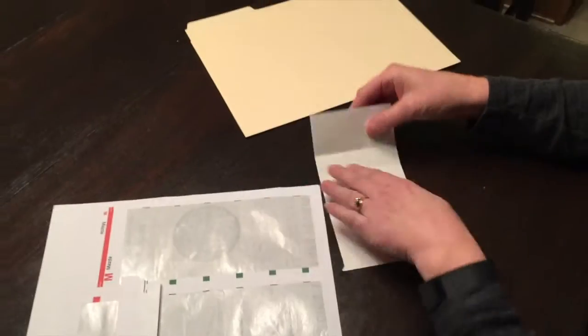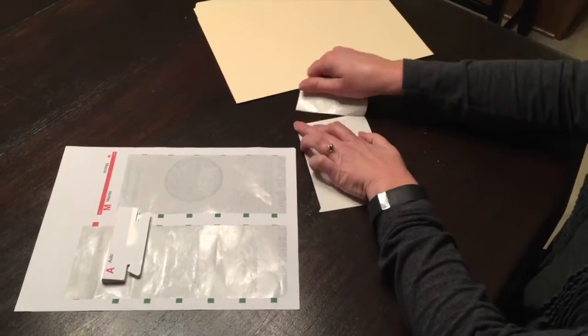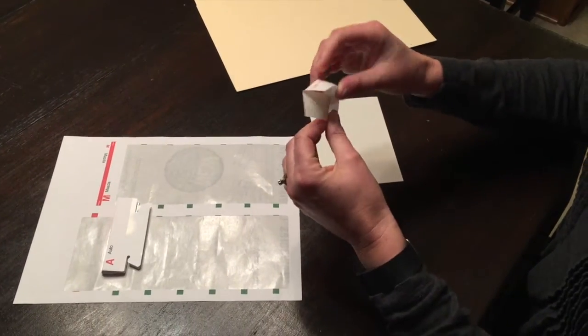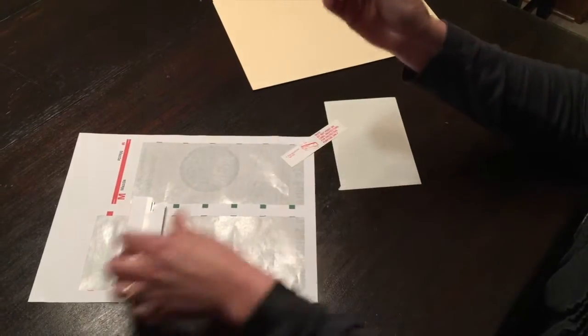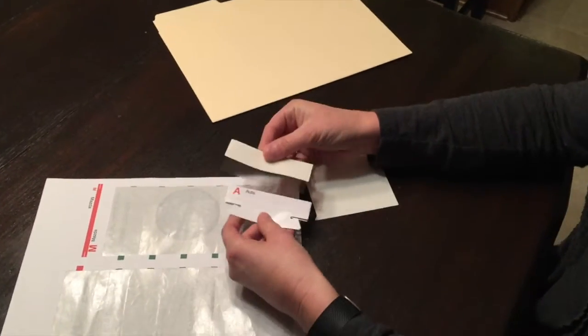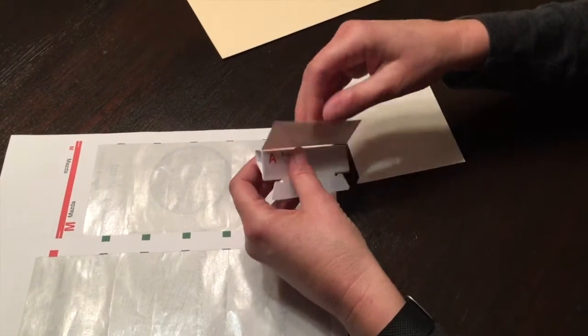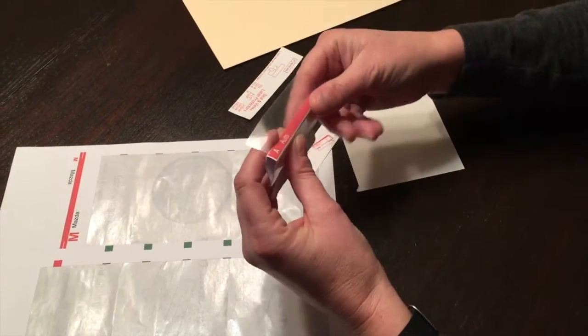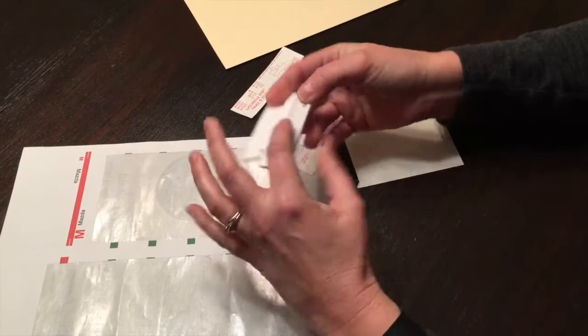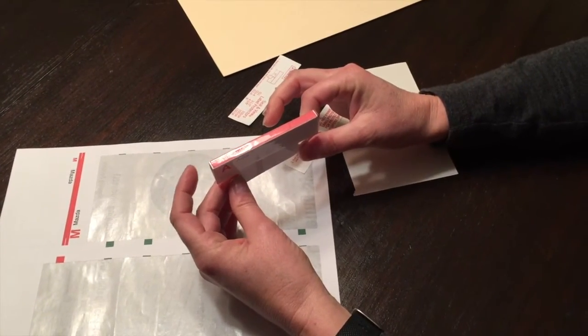Then you're going to take your clear protectors and you're going to just take half of the backing off. You're going to carefully place it on there, smooth it out, and then roll it over and smooth it. Now you've got your label.